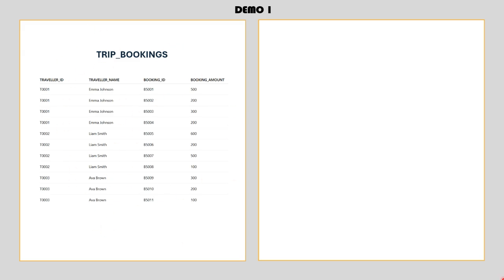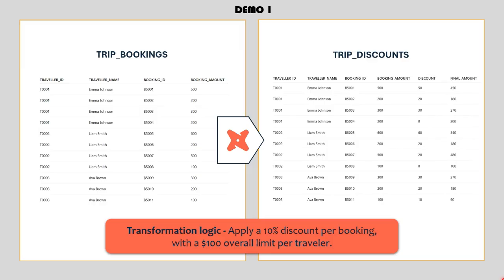The transformation logic is: we want to apply a 10% discount on each booking, but with one condition — for each traveler, the total discount they receive should not exceed $100. Here's the output we're aiming for.